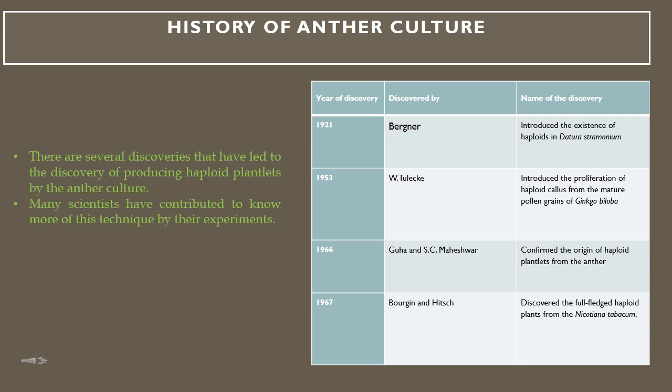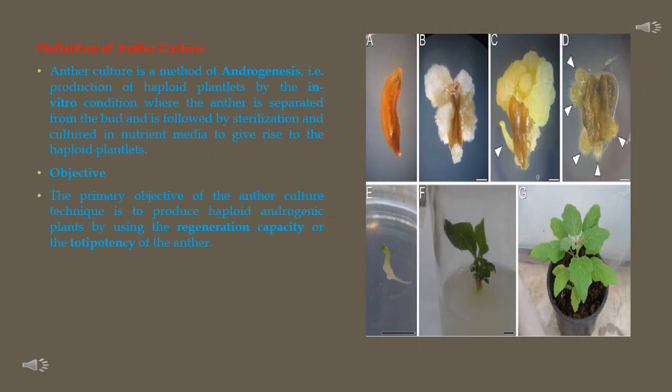Next, we will discuss the history of anther culture. Several discoveries led to the production of haploid plantlets by anther culture, and many scientists contributed to this technique through their experiments. Anther culture is a method of androgenesis — the production of haploid plantlets in vitro — where the anther is separated from the bud, followed by sterilization and culturing in a nutrient media to give rise to haploid plantlets. Any tissue culture technique requires in vitro conditions and a nutrient media, and anther culture is no exception.